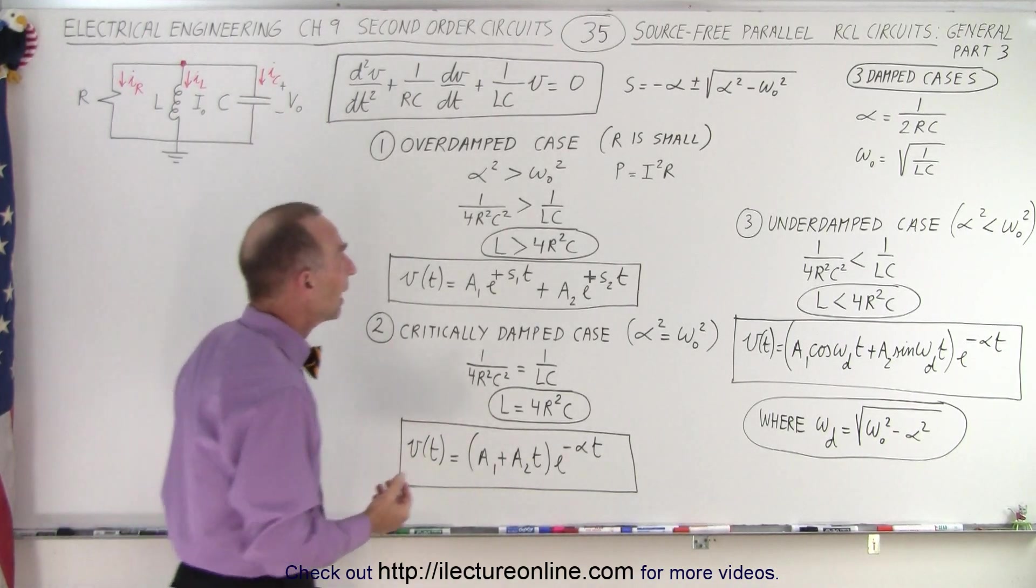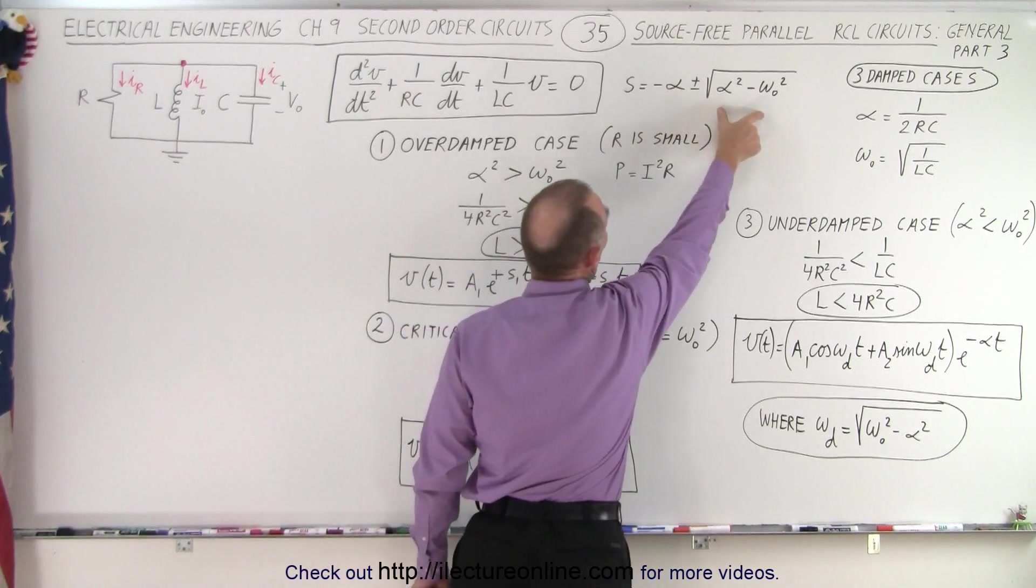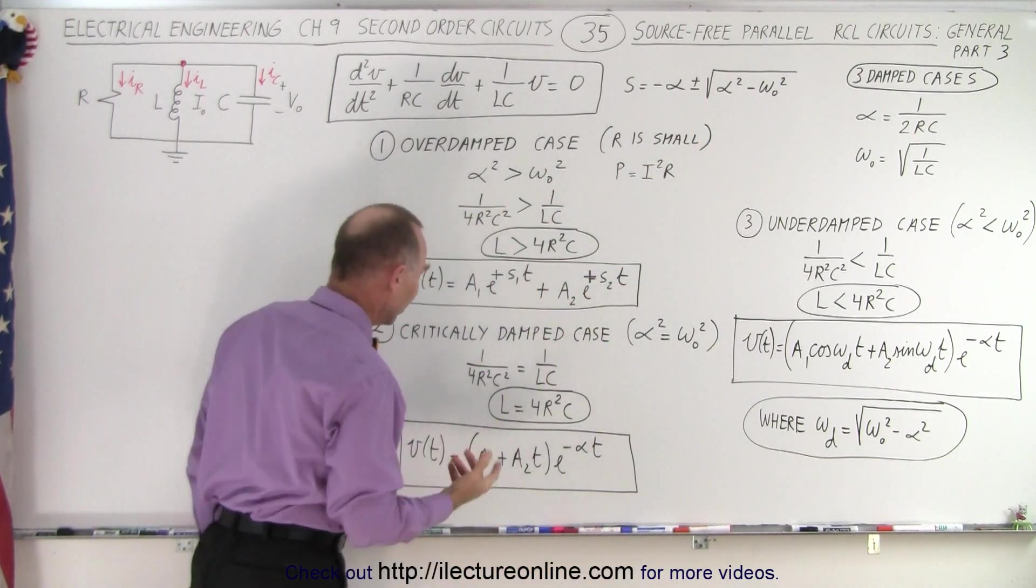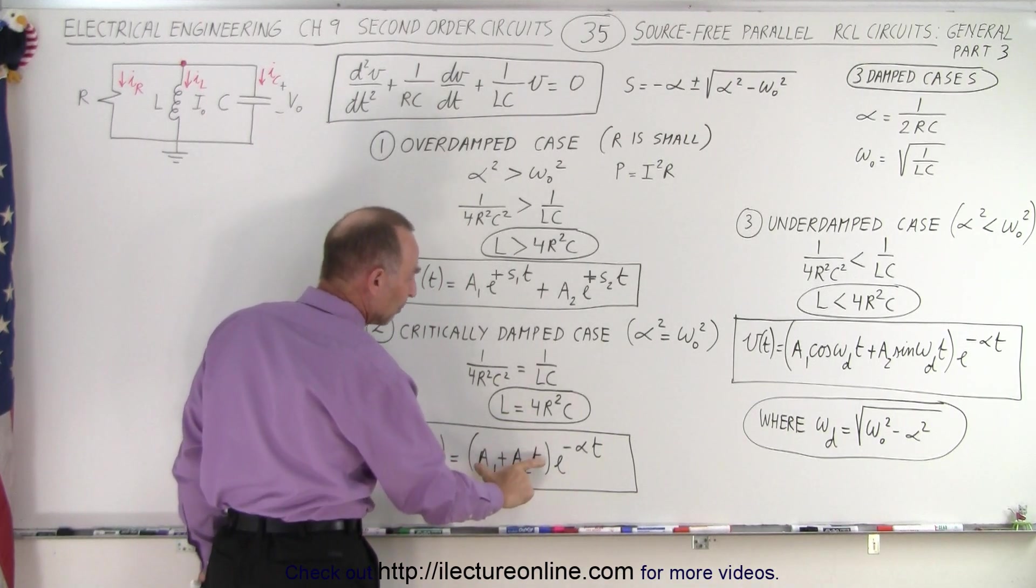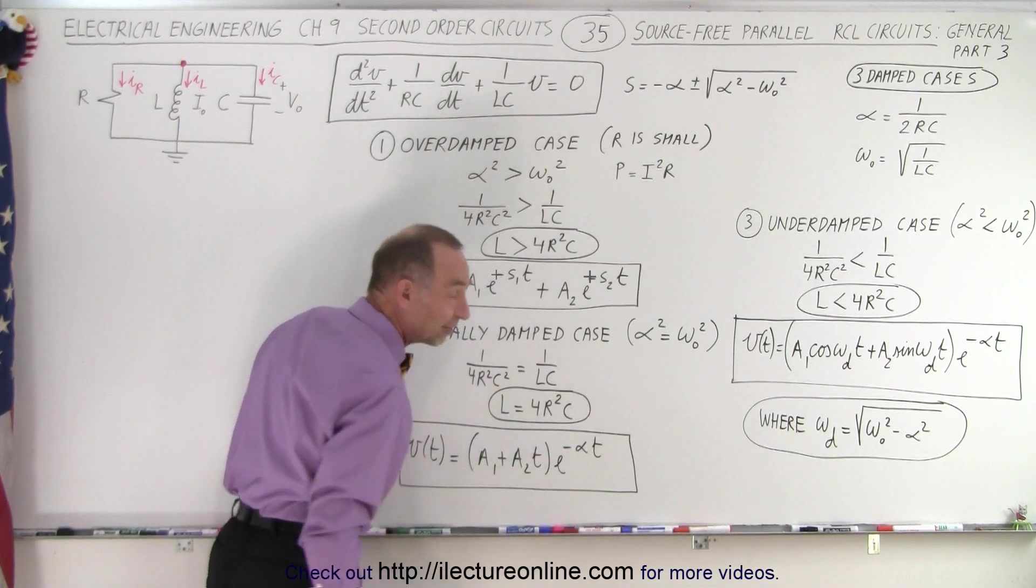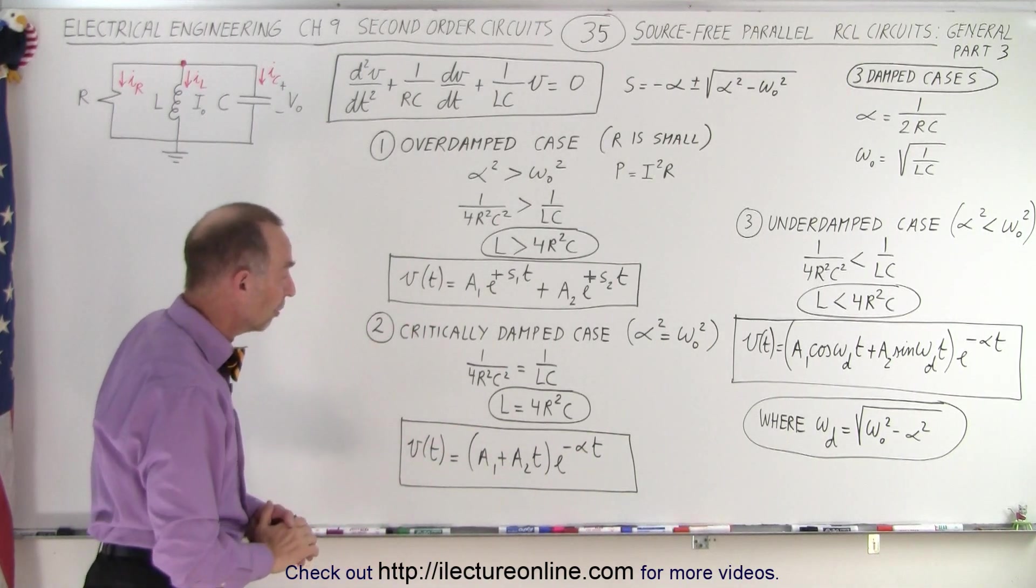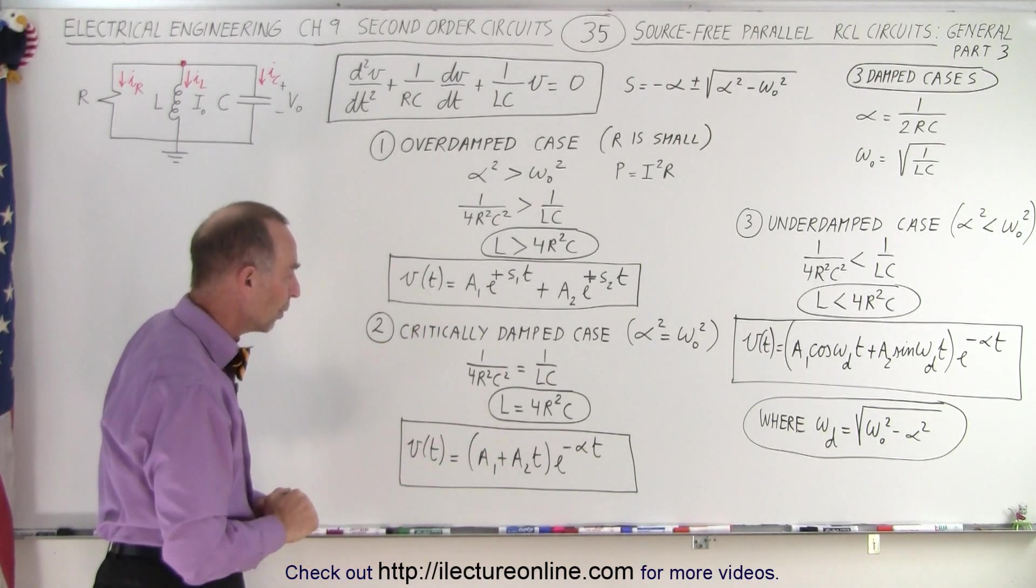Well, in that case, you only have one S. So this goes to 0, S is equal to negative alpha, and so therefore you end up with A1 plus A2 times time, multiplied times E to the minus alpha T. Alpha, of course, being the singular solution of that characteristic equation.